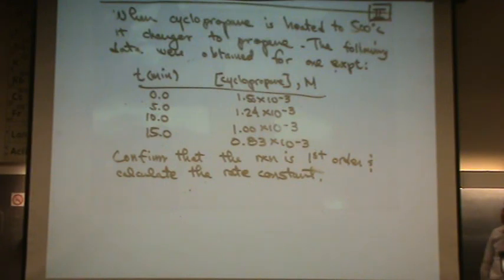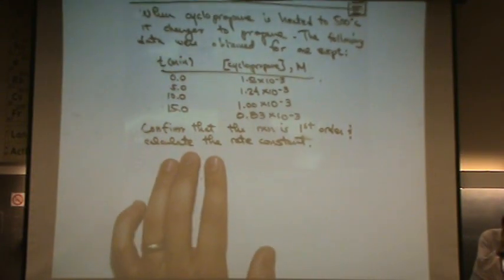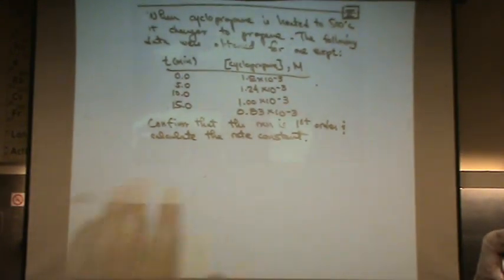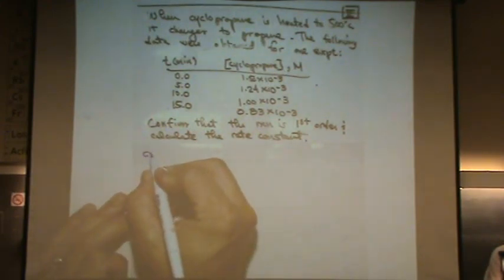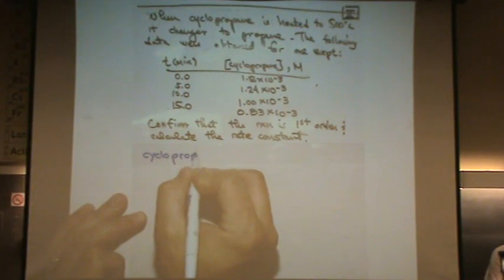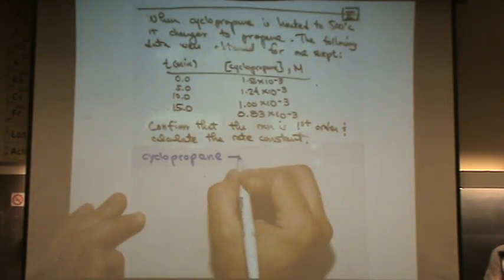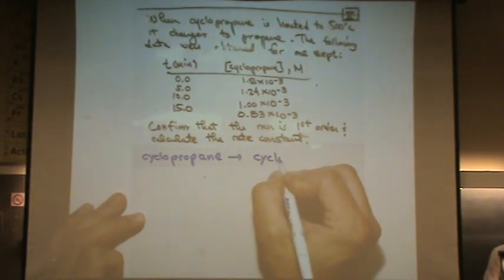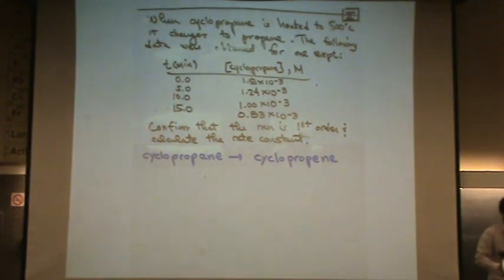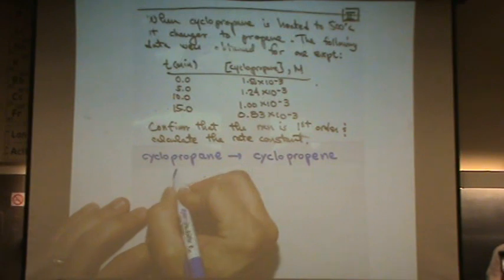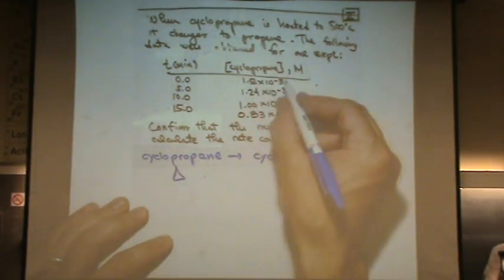Confirm that this reaction is first order and we want to know the rate constant. Now once you've got that taken care of, what we're doing is going from cyclopropane. Well, for rate constant purposes, it doesn't really matter what the product is. We're focused on the reactant. That's why there's reactant data given.